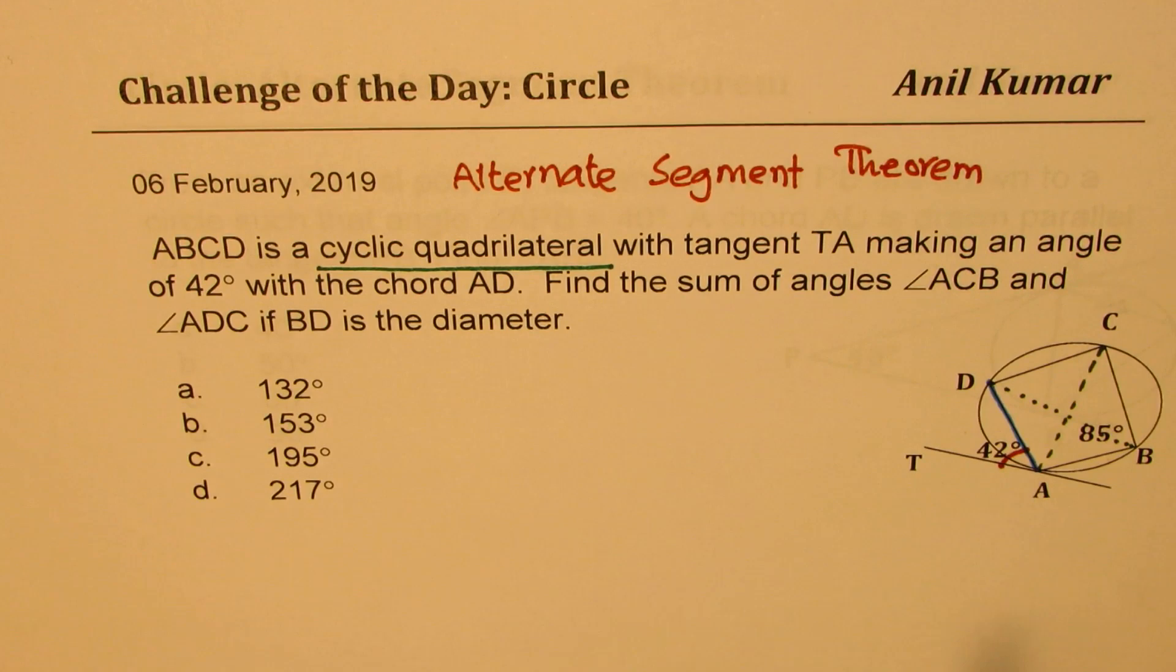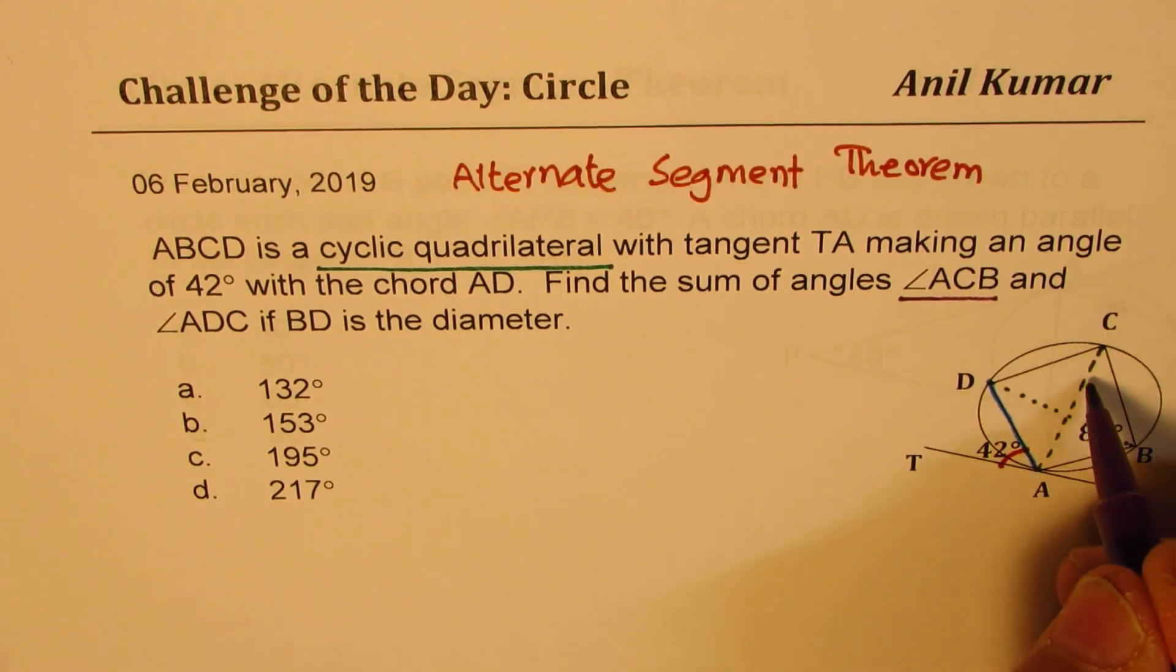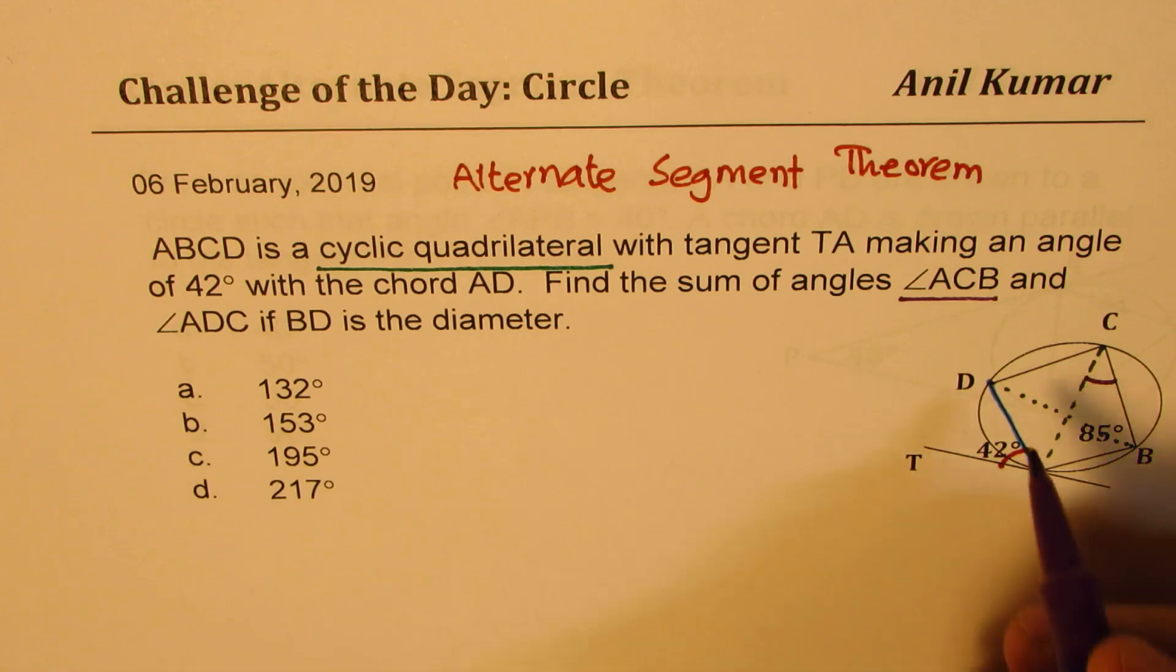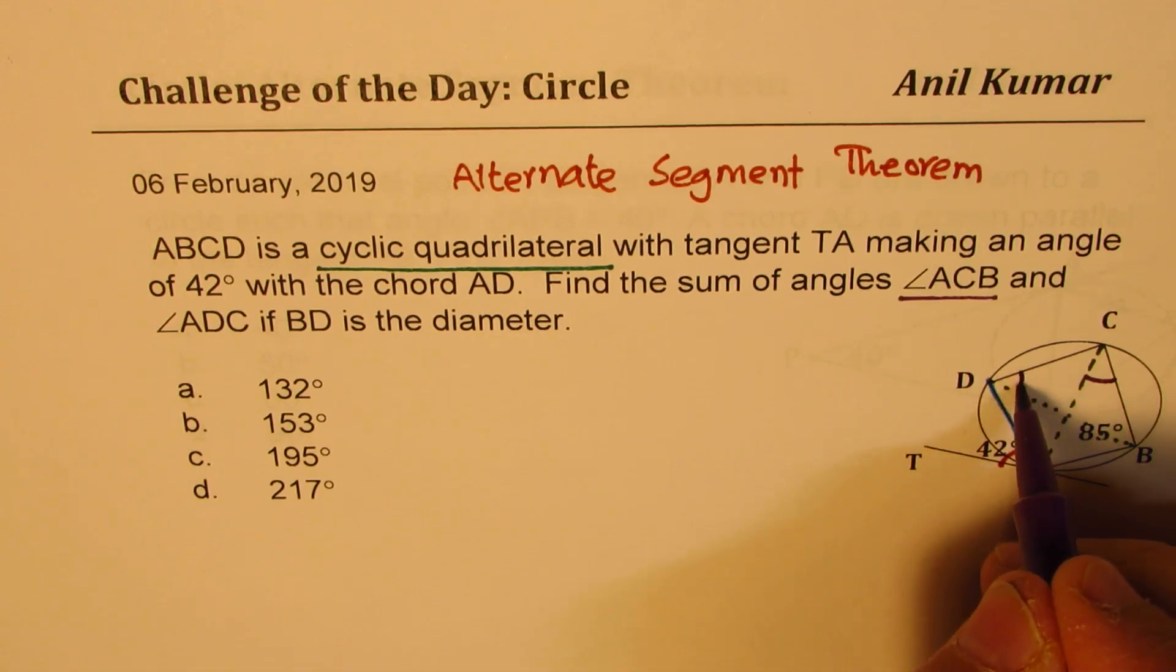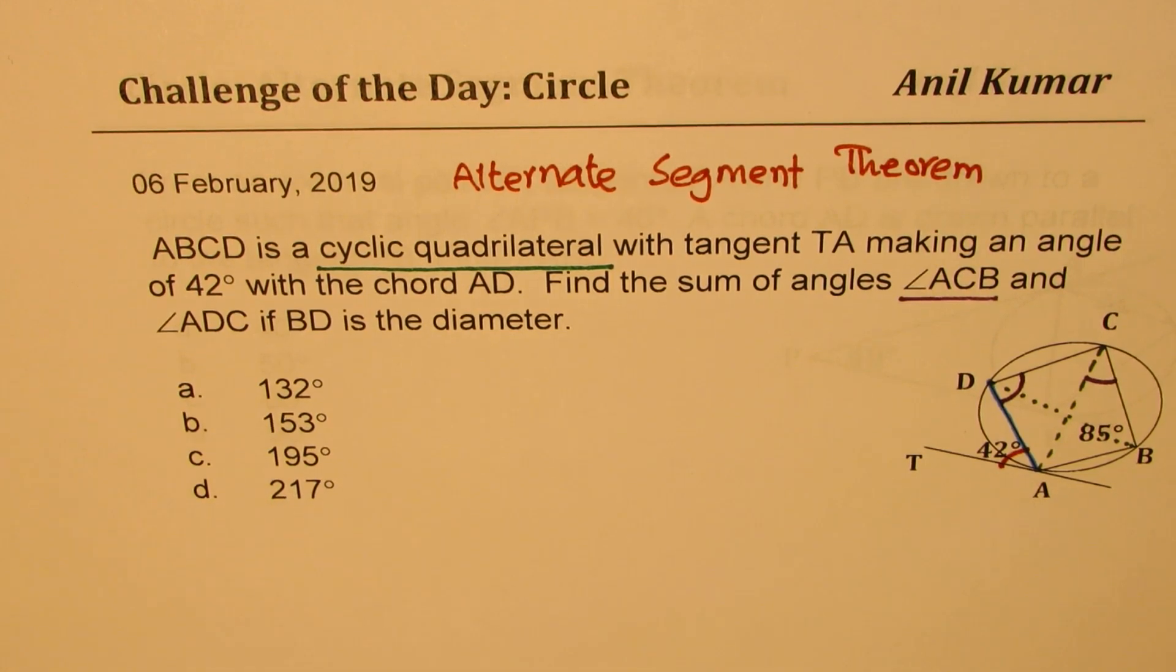But what do you need to find? You need to find the sum of angle ACB, ACB means this angle, and ADC, ADC is this angle. So that is the sum, which is one of these. Now with this knowledge, you should be in a position to solve this question. So try it out, write down your choices in the comments, and I'll provide you with a solution tomorrow.